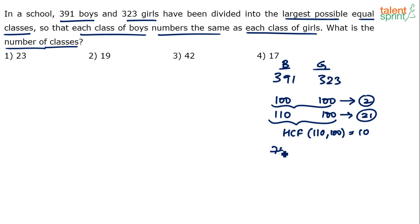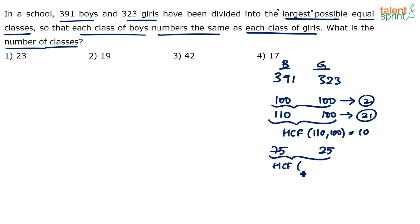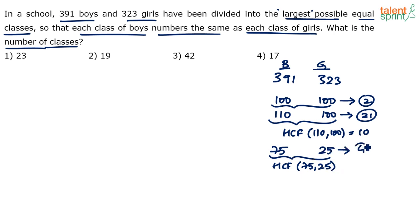Let's say there are 75 boys and 25 girls. We want the largest class size, which means we take the HCF. HCF of 75 and 25 is 25, so 25 students per class. Number of classes for boys: 75 ÷ 25 = 3; for girls: 25 ÷ 25 = 1; total classes: 3 + 1 = 4.